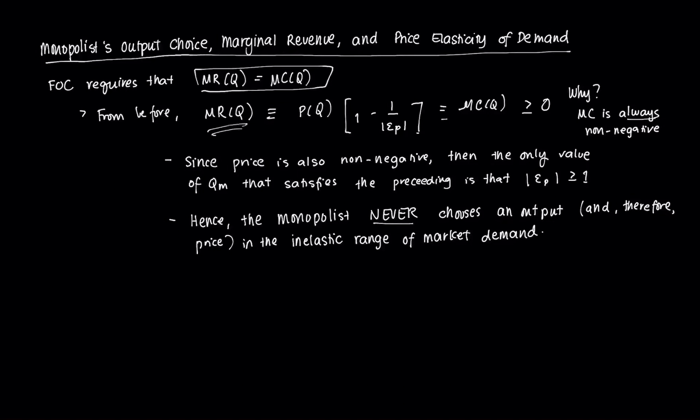Because this is MR and it should be equal to MC at equilibrium. Now we assume that this is always greater than zero, and the main reason is that at equilibrium, MC is always non-negative.